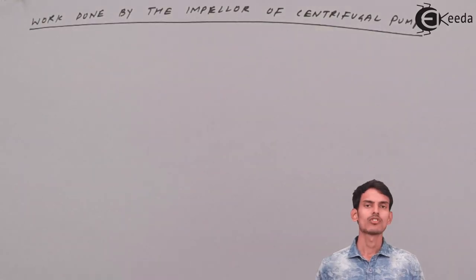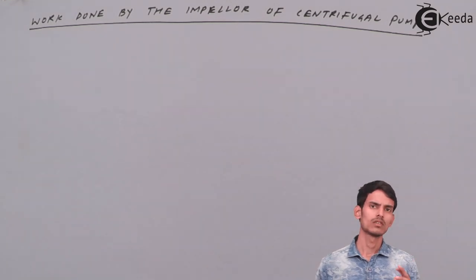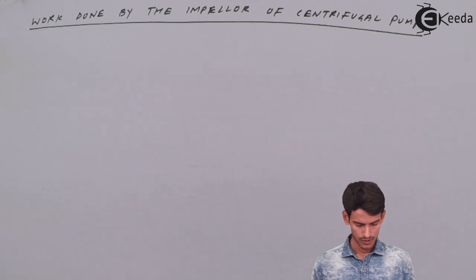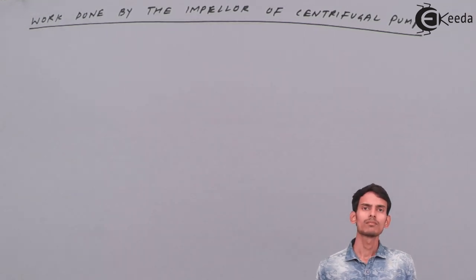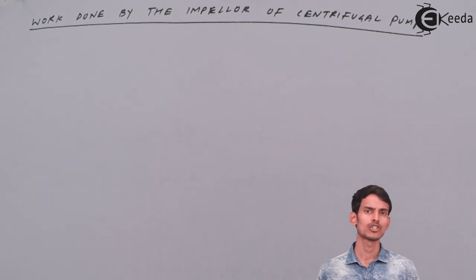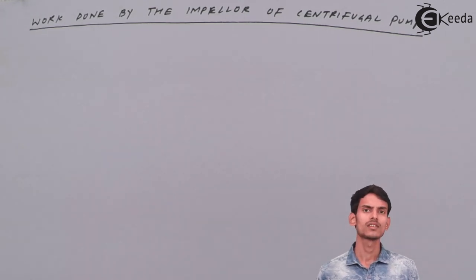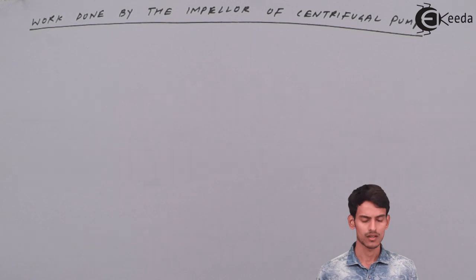Before directly going on to work done, let's see how the velocity diagram looks. Centrifugal pumps are the exact opposite of turbines. Since we had velocity triangles in turbines, here also we'll have velocity triangles. Let's see how the velocity triangle of a pump looks.